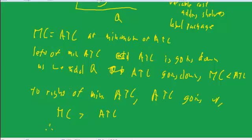Therefore, if to the left, marginal cost is less, and to the right, marginal cost is greater, then at minimum, marginal cost equals average total cost.